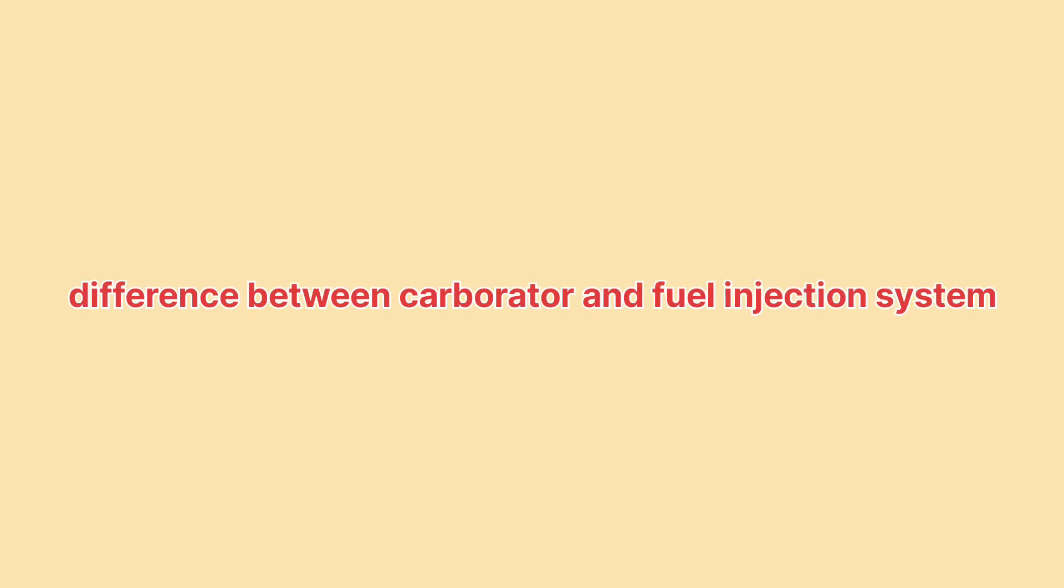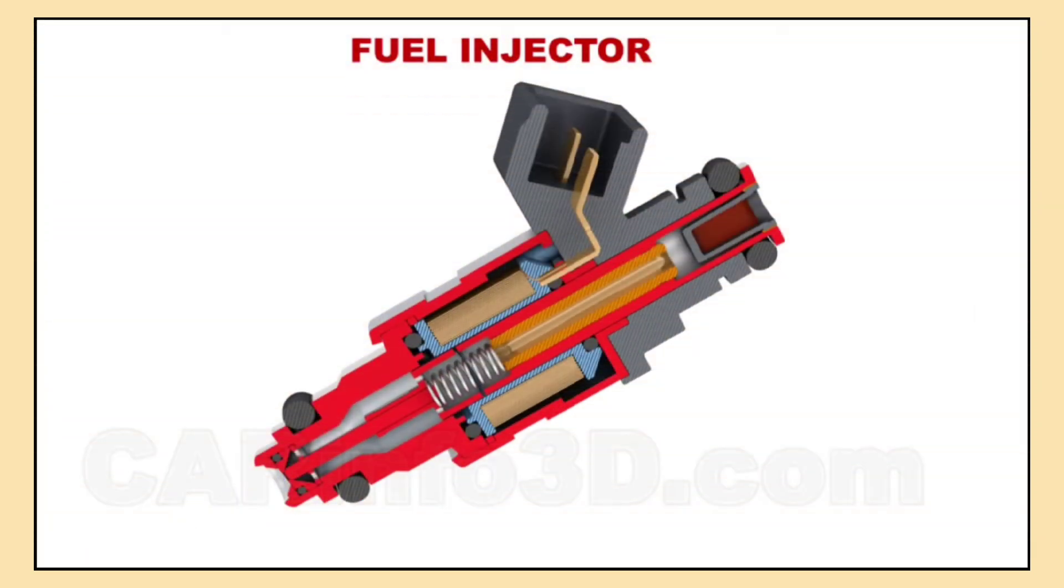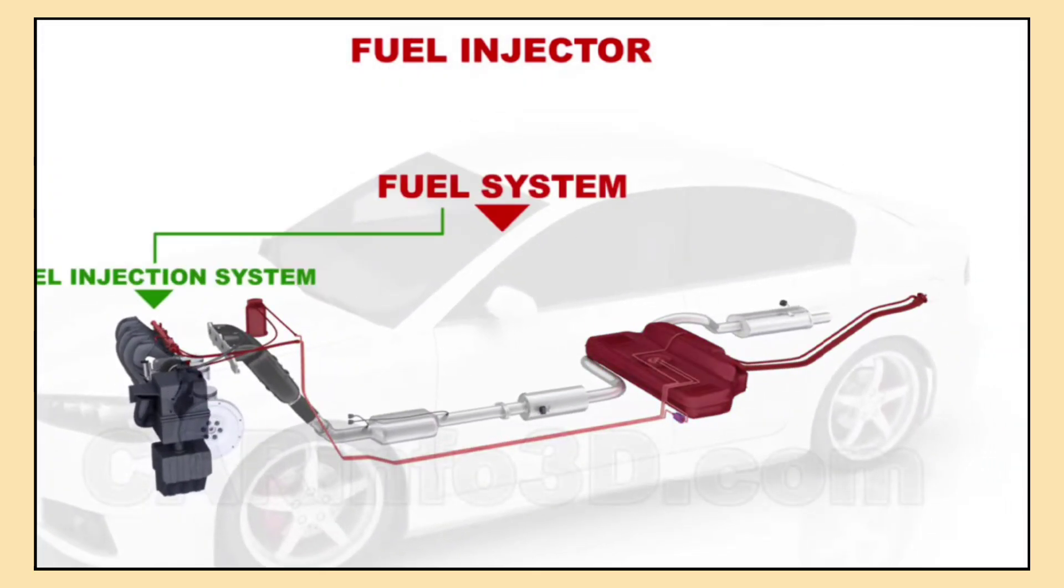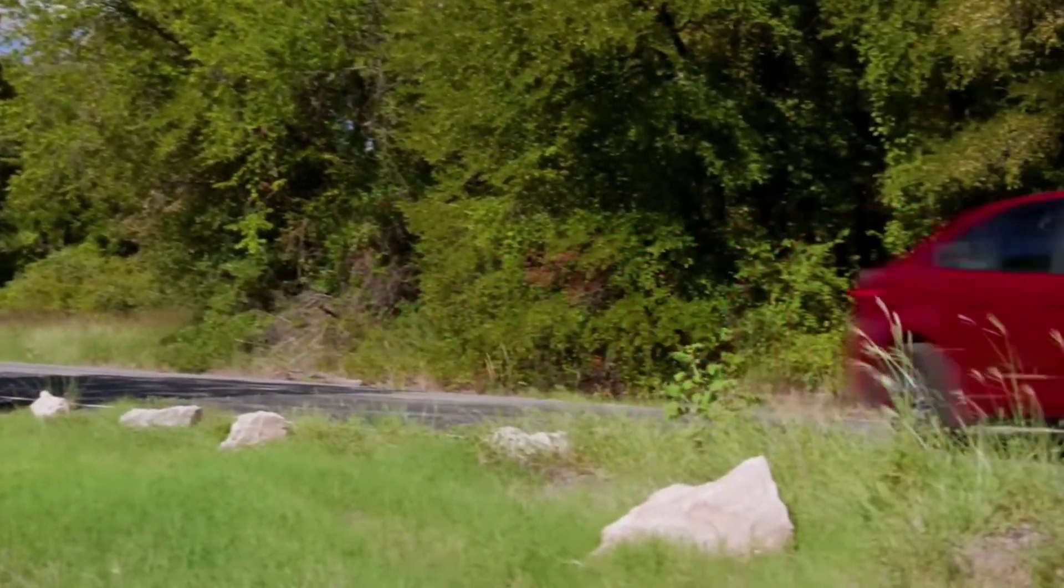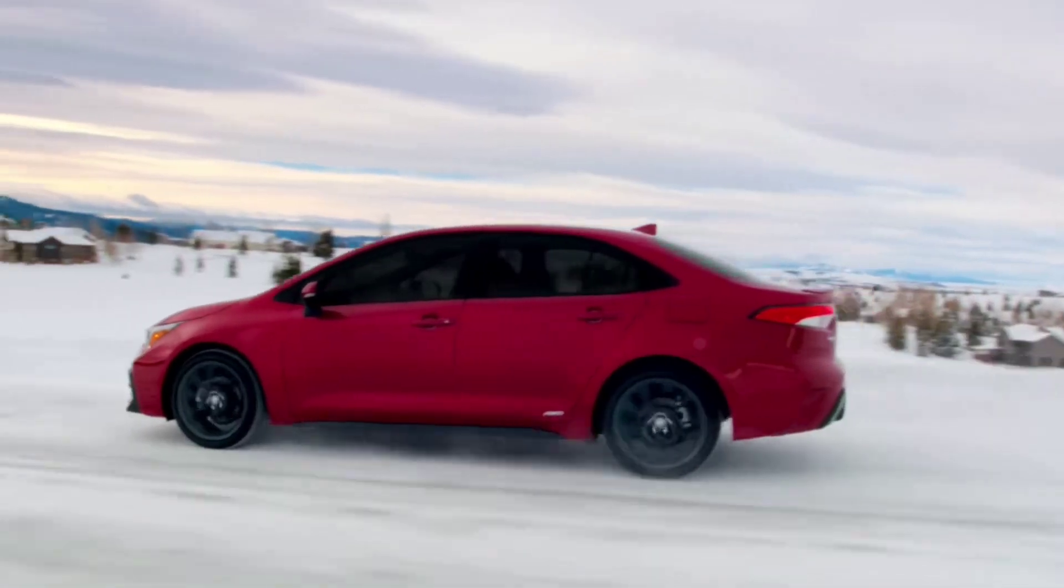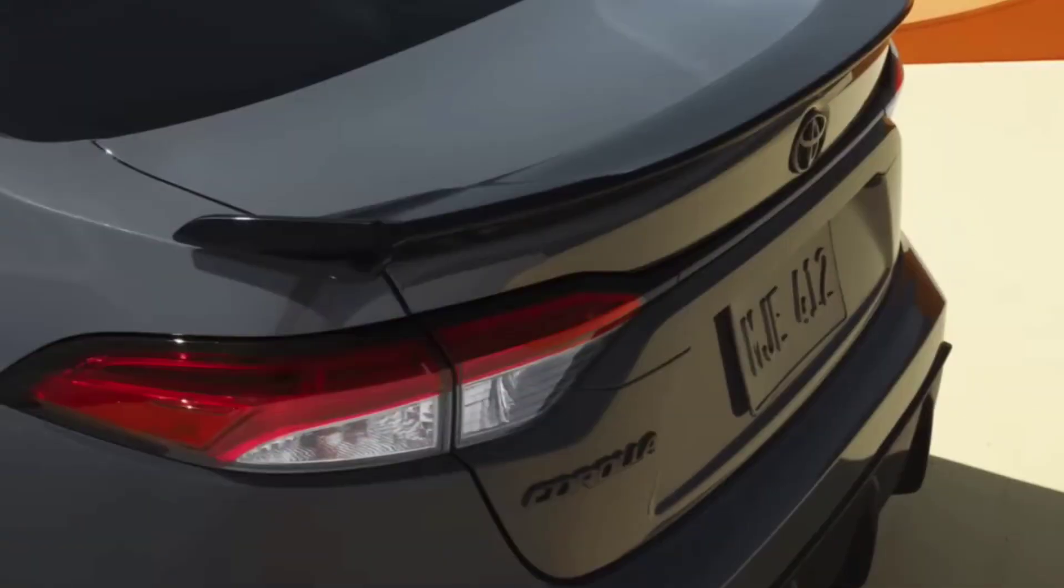So what's the real difference between a carburetor and fuel injection? The biggest difference is the level of precision. Fuel injection is much more accurate at regulating the air-fuel mixture, which means better fuel efficiency and more power. The ECU's constant adjustments ensure that fuel is used more effectively, whether you're driving on the highway or idling at a stoplight.